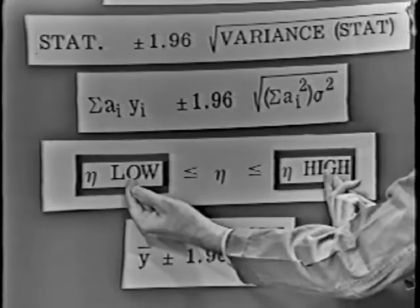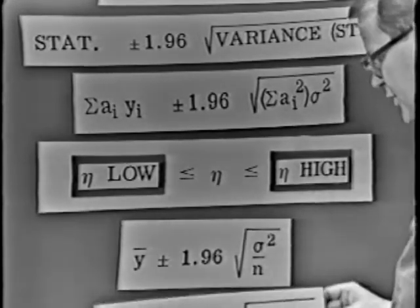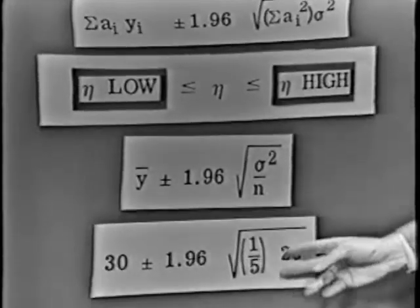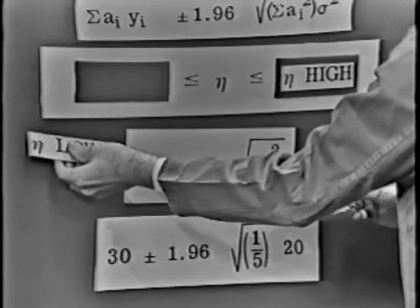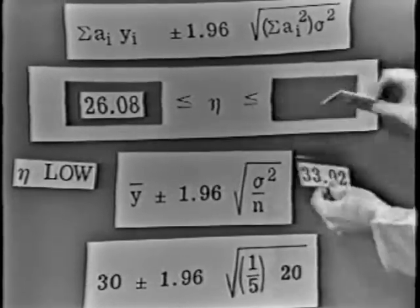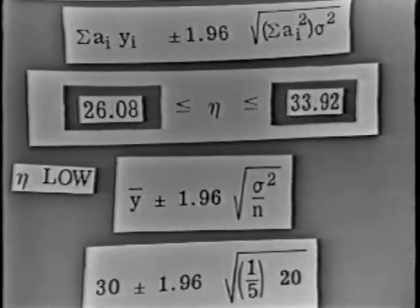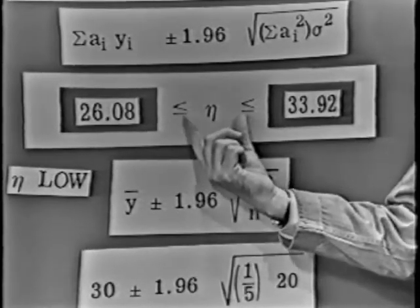That gives us the confidence limits for the mean. Plugging in the data: y-bar was 30, and the variance of the statistic is one-fifth times 20. The low value for η was 26.08, and the highest was 33.92 — effectively 26 to 34. All values of η which lie inside this interval are not contradicted by the data. This is a 95% interval statement for the mean performance of the batteries.